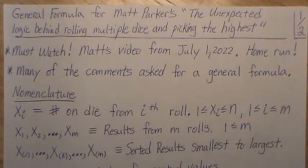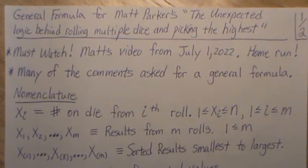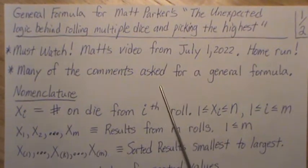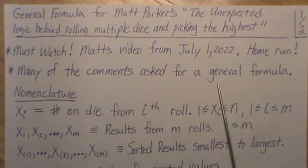Great video, took a geometric approach, very clever, but many of his comments around the video asked for a general formula. Instead of rolling it twice, what if you roll it three times or four times or m times? And another one was instead of taking the maximum, what if you take the minimum or the middle value? And so what we're going to do here is provide that very general formula that answers all those questions.